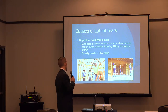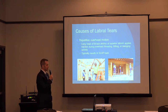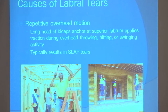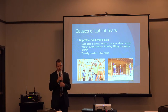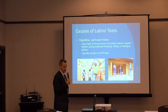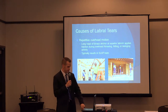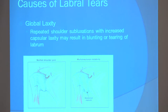The other causes of labral tears are repetitive overhead motion. The long head of the biceps actually anchors at the superior labrum, and with repetitive overhead motion — such as throwing, hitting, swinging — any overhead type motions like a drywaller, we typically see this result in SLAP tears rather than the posterior or anterior labral tears. And then global laxity — this is not caused by work, but we do see patients with global laxity where repetitive subluxations can cause tearing or blunting of that labrum.